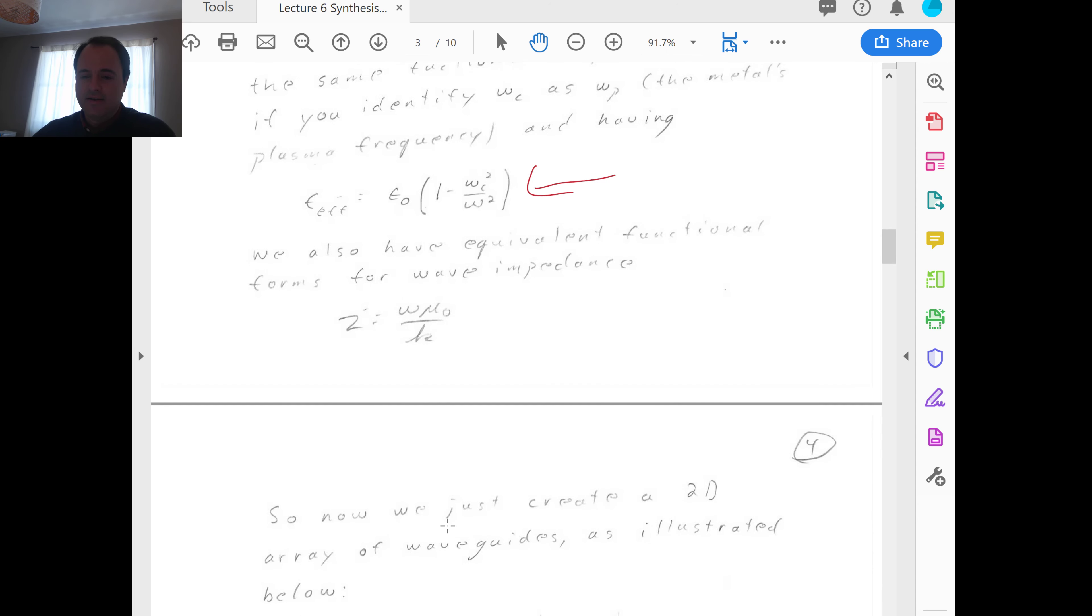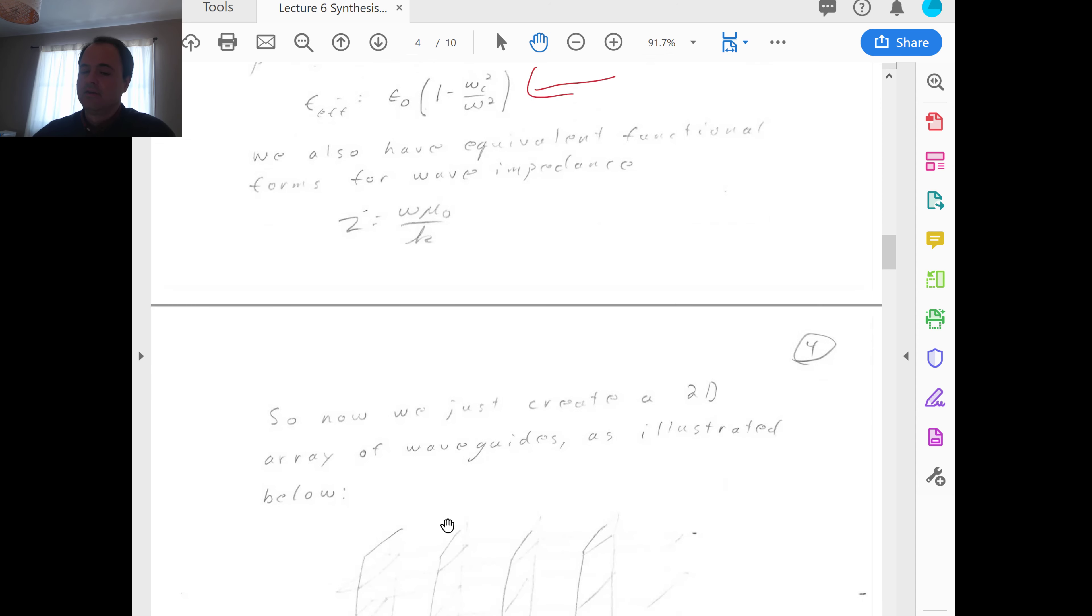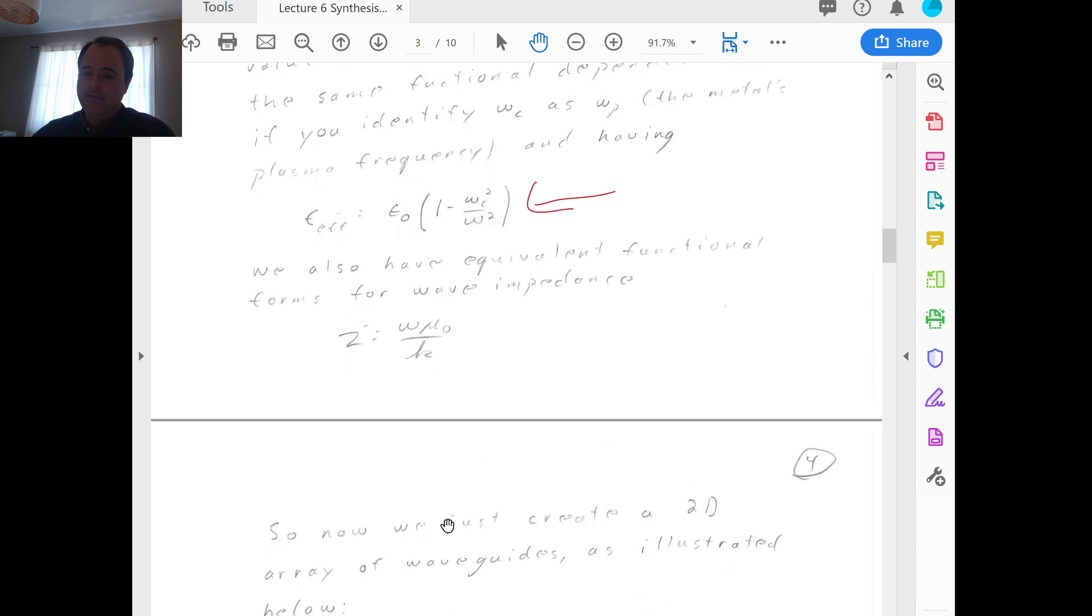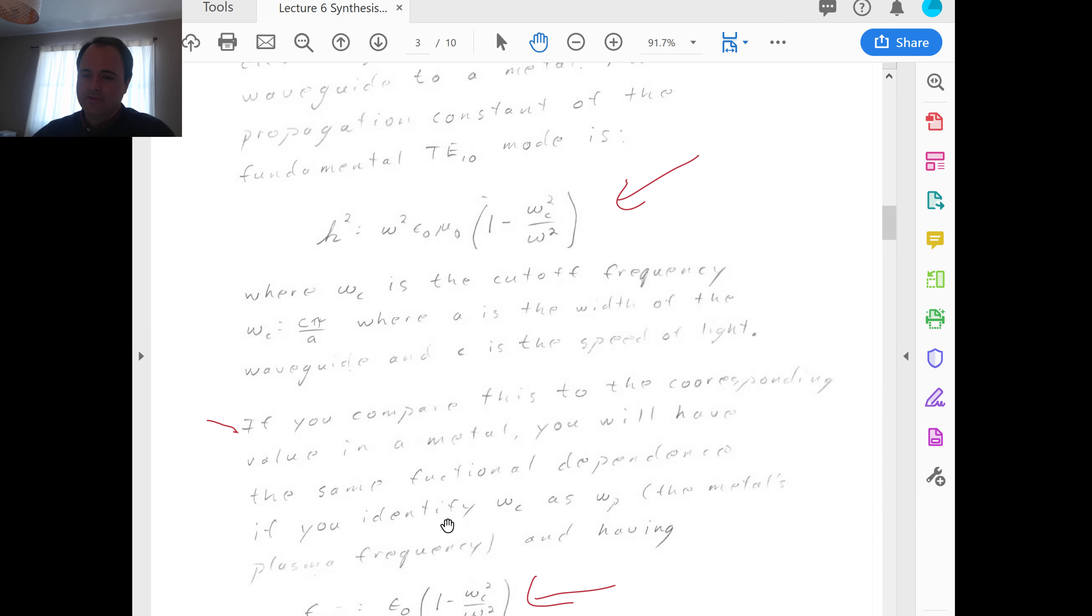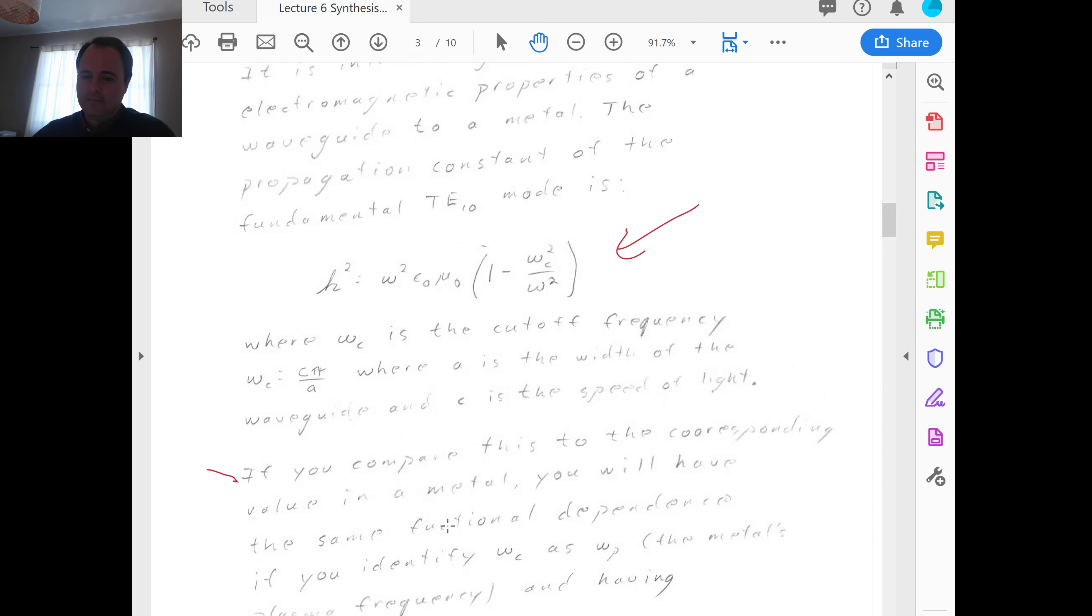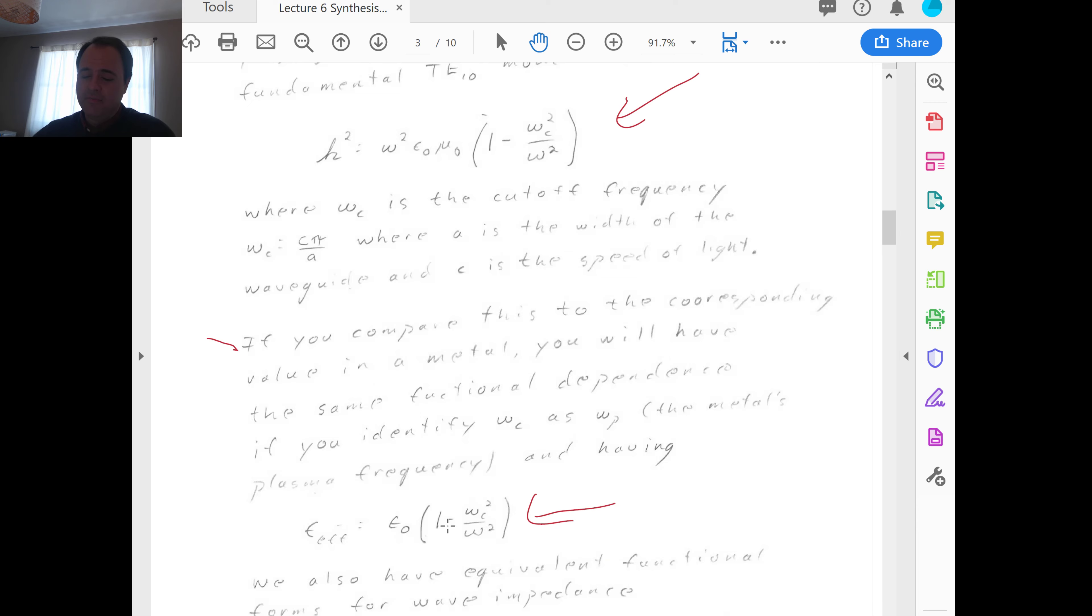And then having that the effective dielectric constant, or permittivity, is this, epsilon naught times the quantity 1 minus omega c squared over omega squared. And then you also have the same thing for the wave impedance, that z is equal to omega mu naught over the wave number, wave vector k, wave number. And so, this equivalence is quite strong. So, the waveguide, from the perspective of this TE10 mode, kind of mimics the behavior of a metal.